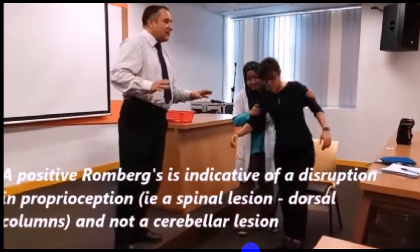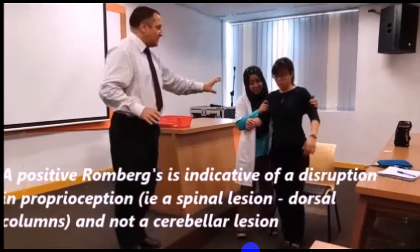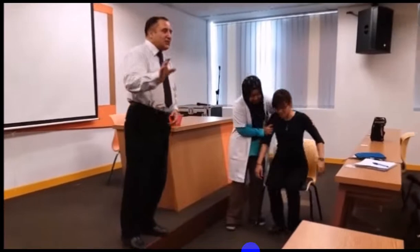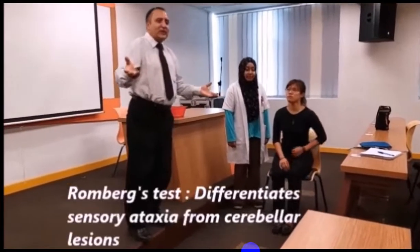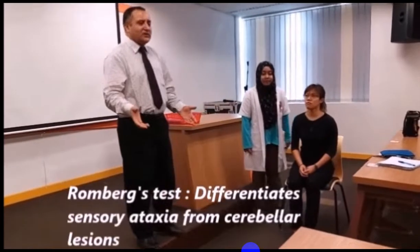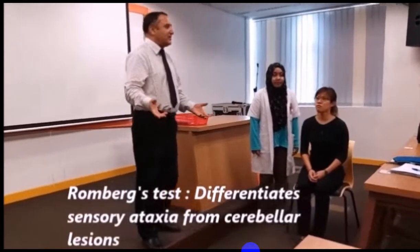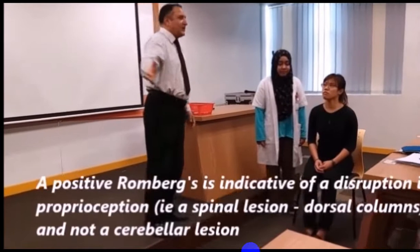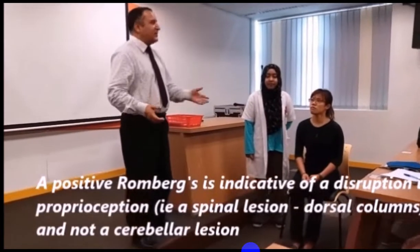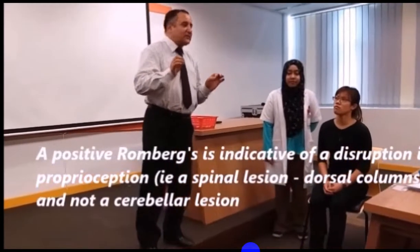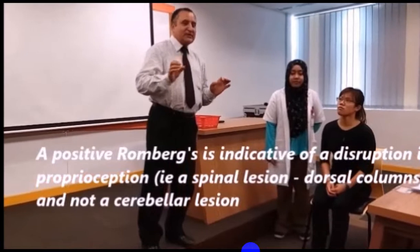In sensory ataxia, with eyes open the person will be able to maintain balance, but with eyes closed the Romberg test becomes more sensitive and the person will tend to fall. In cerebellar, the person will tend to fall on both sides. Sensory ataxia can be easily differentiated from cerebellar ataxia. This test is done when we have to detect whether a spinocerebellar problem is there — sometimes the spinocerebellar tracts may be damaged.